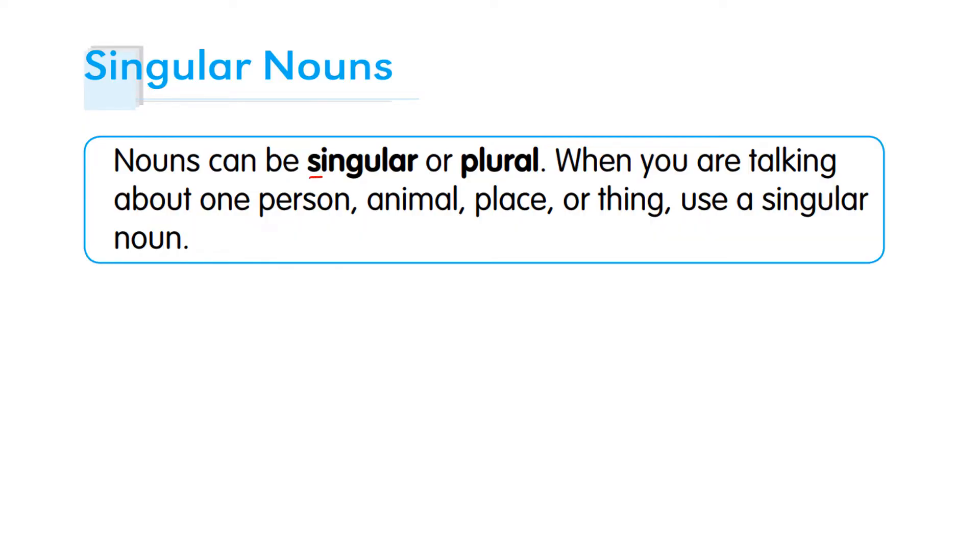Nouns can be singular, which means one, or plural, or more than one. When you are talking about one person, one animal, one place, or one thing, use a singular noun.